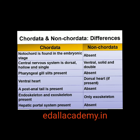3. Pharynx is perforated by gill slits in chordates, while in non-chordates gill slits are absent. 4. Heart is ventral in chordates, while in non-chordates heart is dorsal, if present. 5. A post-anal tail is present in chordates, while in non-chordates post-anal tail is absent.